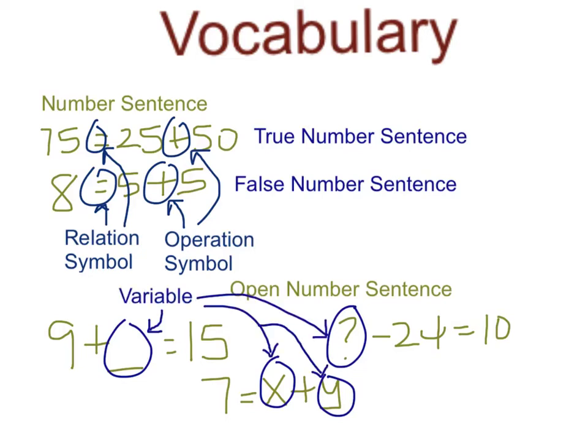Our final vocabulary word for today is solution. A solution is a value or values for the variable or variables in an open sentence that makes the sentence true. For example, if we wanted to find a solution for this bottom problem here, we could say that x equals 3 and y equals 4. Both of these numbers when plugged in for the x and the y in the open number sentence would make that number sentence true because 3 plus 4 does in fact equal 7.